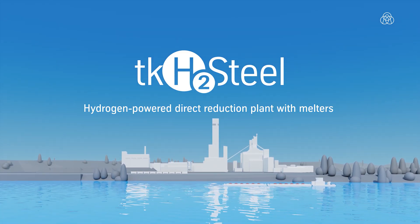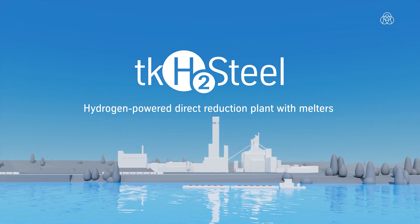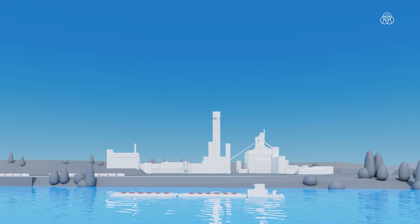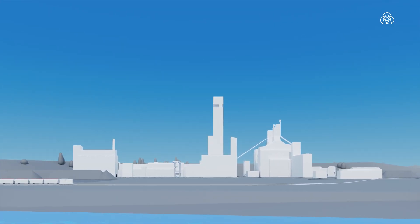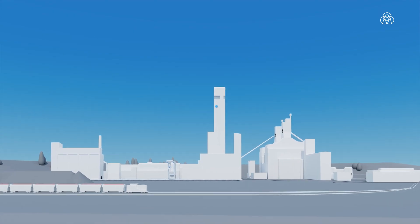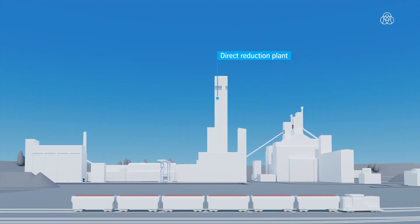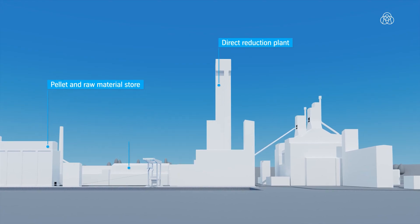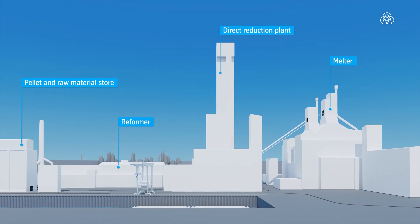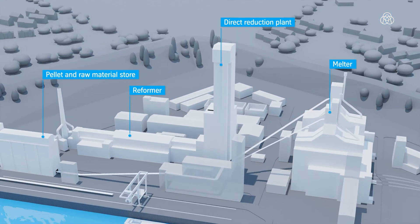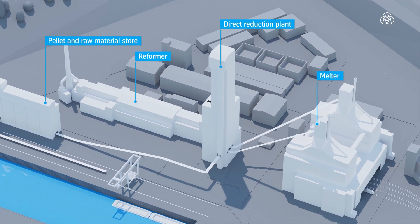A 100% hydrogen capable direct reduction plant is being built at Europe's largest iron and steel plant in Duisburg. With an annual production capacity of 2.5 million metric tons of directly reduced iron, we will save up to 3.5 million metric tons of CO2. We at ThyssenKrupp Steel are thus undertaking pioneering work in the decarbonisation of the steel value chain.